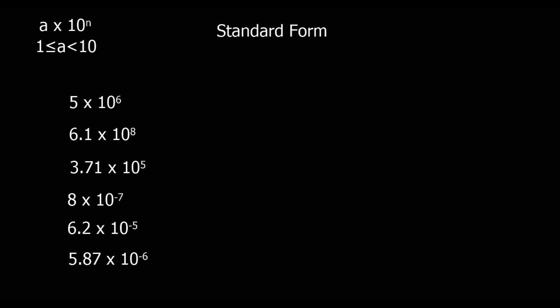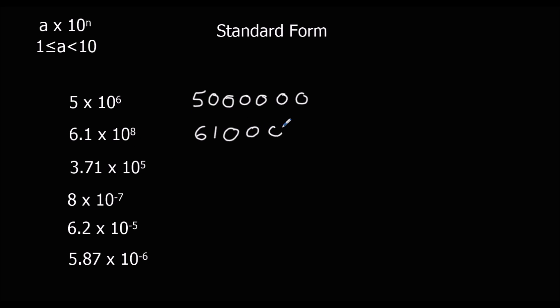These are numbers in standard form, and what we're going to do is write them as ordinary numbers — take the numbers out of standard form and convert them back. The first number is 5 times 10 to the power of 6, meaning 5 times 10, six times: 50, 500, 5,000... continuing to 6 times. Next, 6.1 times 10 to the power of 8: times 10 once goes to 61, then 7 more times gives us the full number. Then 3.71 times 10 to the power of 5: once to 37.1, twice to 371, then 3, 4, 5.